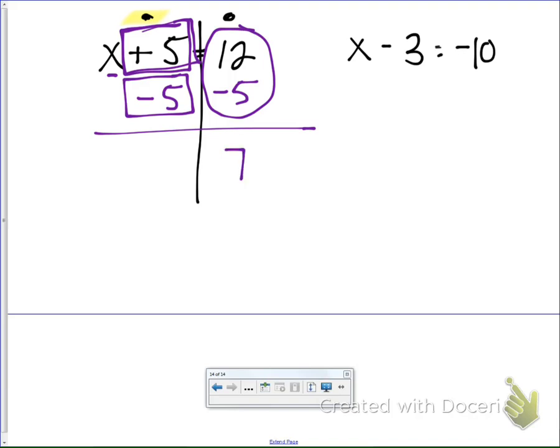Now, I have what I have left over on the other side is my x. So I'm going to bring him down, and I'm left with x equals 7.